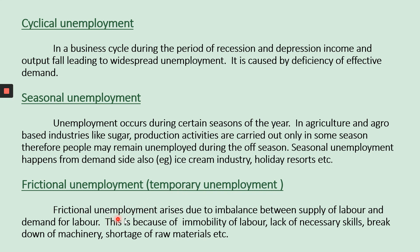The next type is frictional unemployment, also called temporary unemployment — it is not permanent. Frictional unemployment arises due to an imbalance between the supply of labor and the demand for labor. Supply of labor means the number of people willing to work; demand for labor means the number of jobs available. For example, if there are 100 teachers willing to work but a school has a vacancy for only one, that imbalance means 99 teachers won't get the job. This type of unemployment is called frictional unemployment.